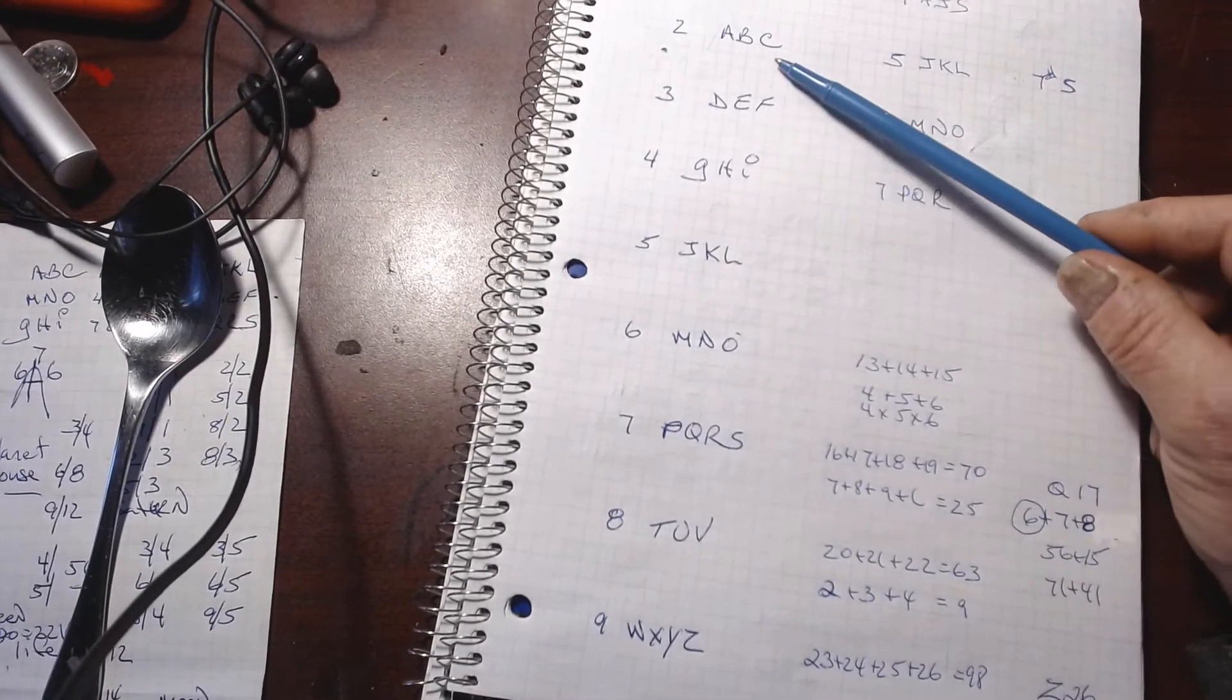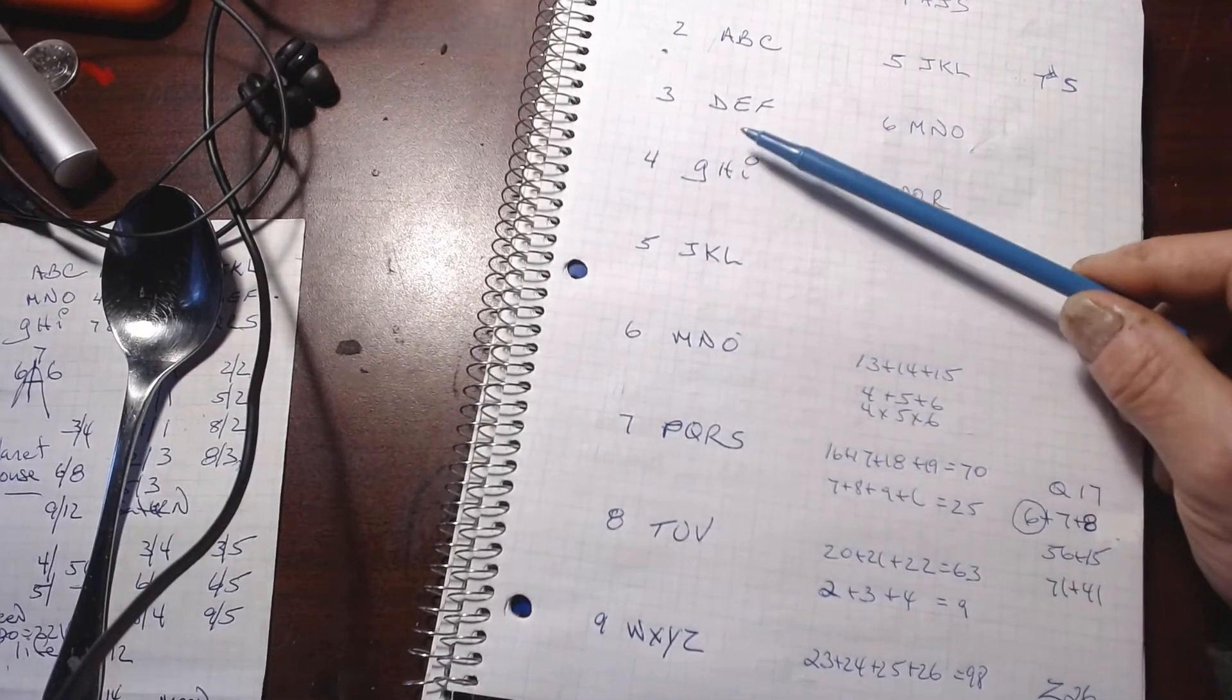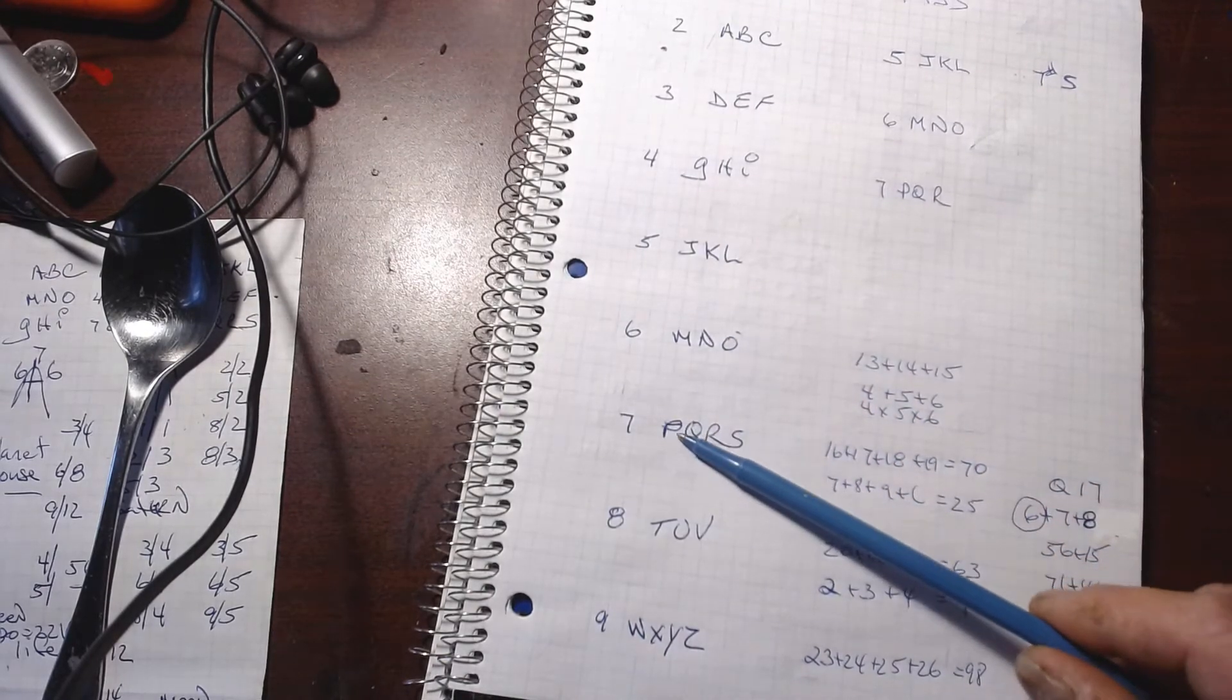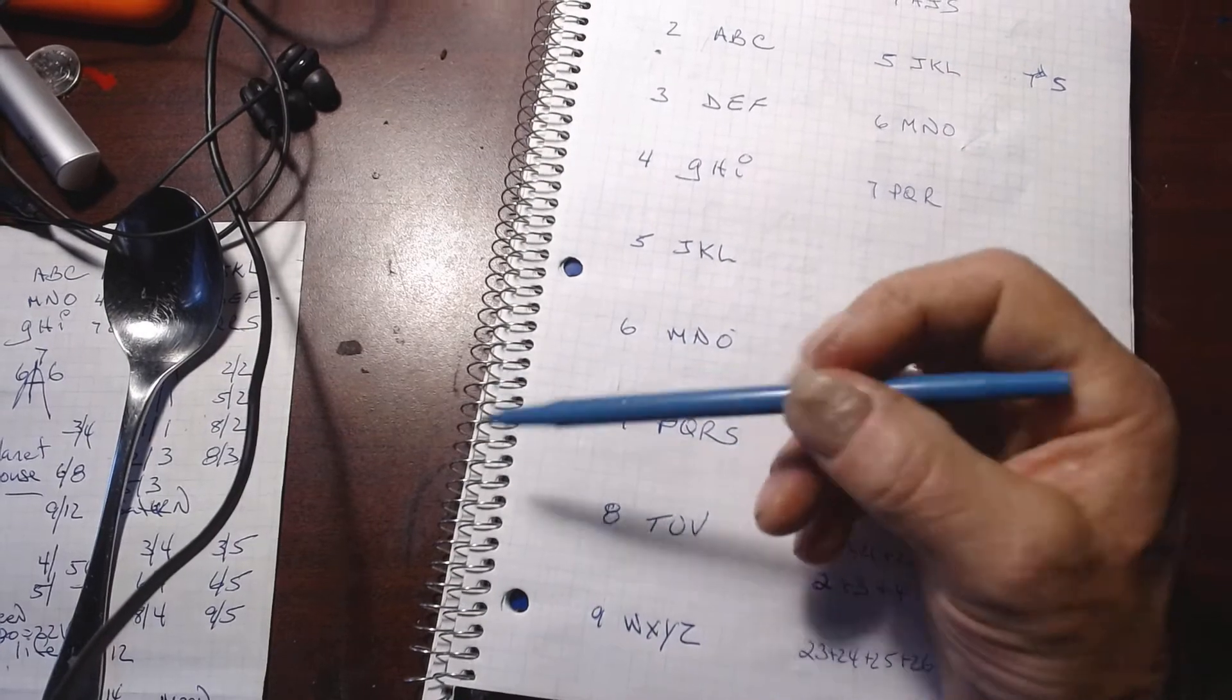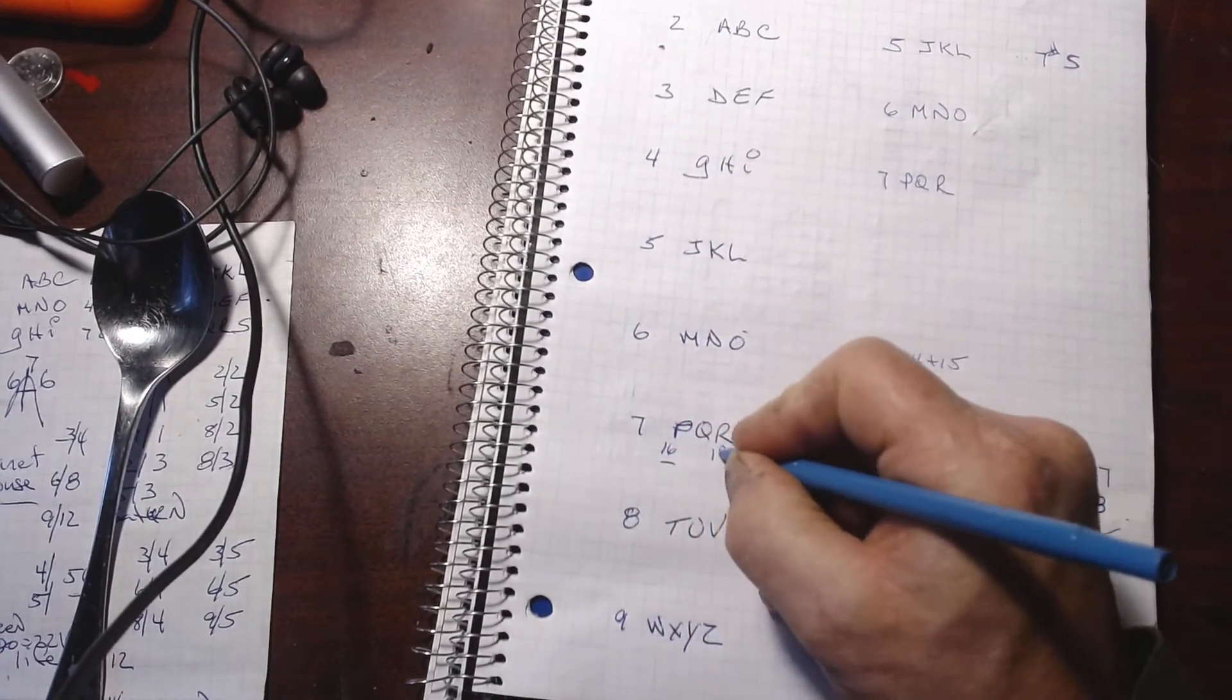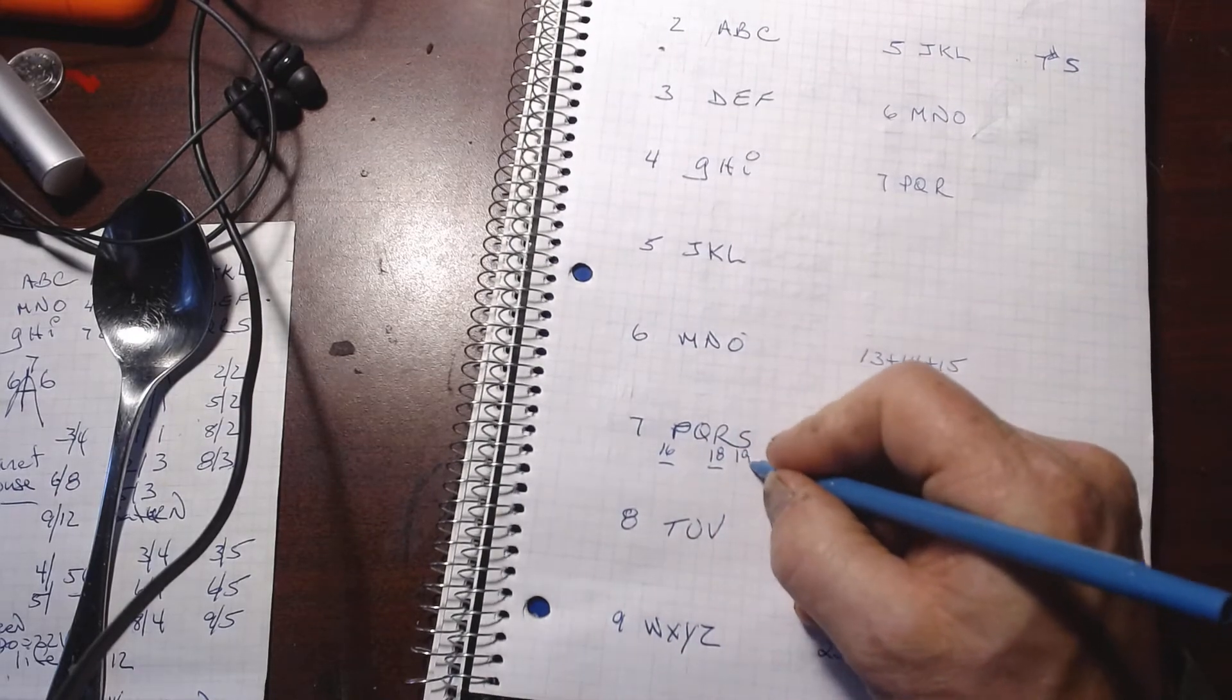On your bank machine, you have A, B, C, D, E, F, G, H, I, all the way down to seven. When you have seven, you now have P, R, S. There is no Q. So you would have the 16th letter, the 18th letter, and the 19th letter.